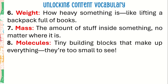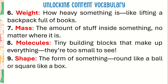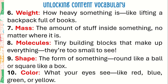Number 8: Molecules. Tiny building blocks that make up everything. They are too small to see. Number 9: Shape. The form of something, round like a ball or square like a box. And number 10: Color. What your eyes see, like red, blue, green, or yellow.